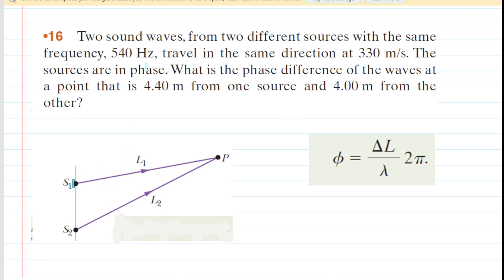Here we have two sound waves produced by sources S1 and S2. These sources are in phase, and the sound waves are traveling in roughly the same direction, at the same speed, and with the same frequency. We have to find the phase difference in the waves.